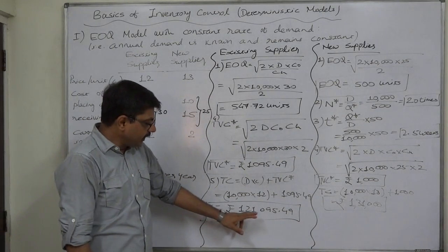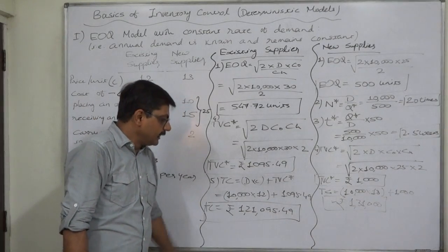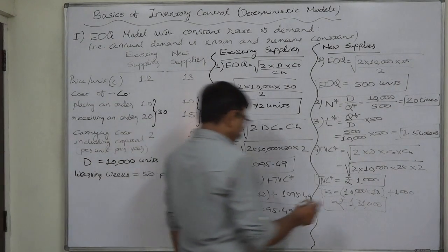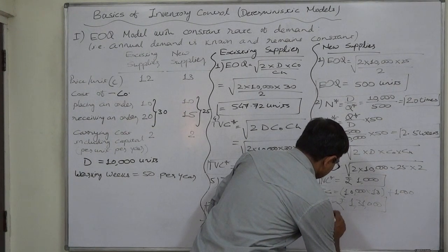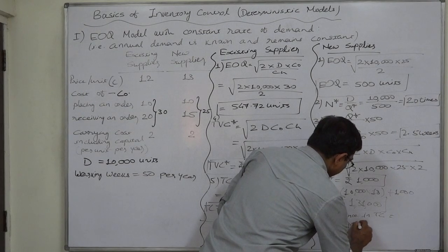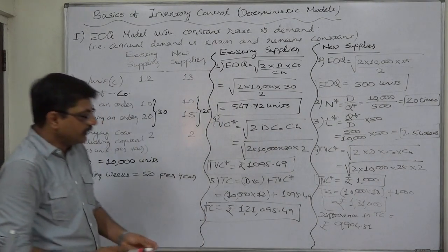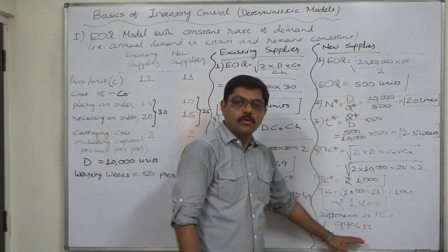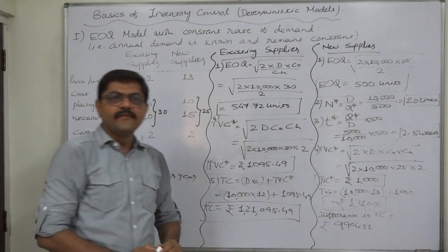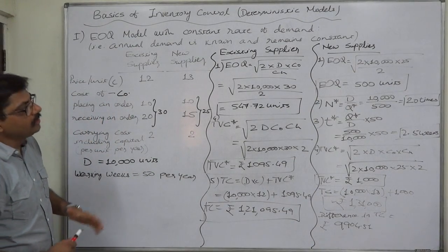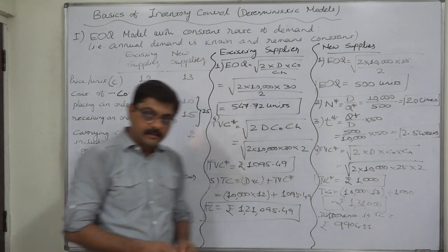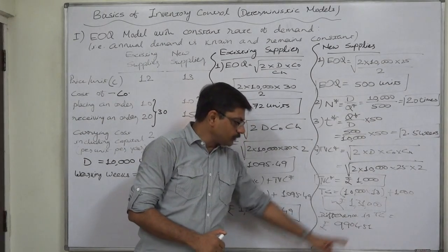Which was, rather which is, at present rupees 121,095.49, or 121,095 approximately, so there is a difference of say 9904.51, difference in total cost equals to rupees 9904.51, approximately 9905 rupees. If we change the supplier, we have to bear additional cost of rupees 9905. In case of this particular inventory, in a factory many different kinds of inventories are there, and in case of all such inventories, these kinds of comparisons we have to make, and on the basis of such comparisons we have to select our supplier. If we change, we will have to bear additional cost of 9905.